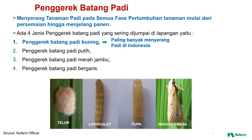Yang kedua, penggerek batang padi putih. Yang ketiga, penggerek batang padi merah jambu. Dan yang keempat, penggerek batang padi bergaris. Ini contoh siklus dari penggerek batang secara umum, yaitu dimulai dari telur, larva atau ulat, kemudian berubah menjadi pupa, dan terakhir menjadi imago atau kupu-kupu dewasa.